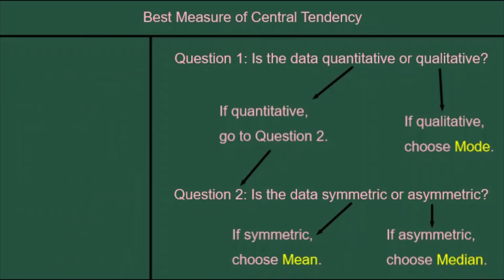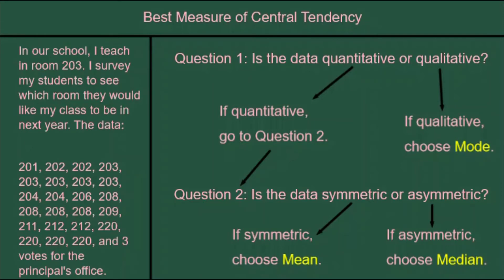One more example. Here, I'm doing a survey among students as to which classroom we should have our math class in next year. The students are choosing from a bunch of choices. And we can see that 203, which is where I'm already teaching this year, seems to be the most popular choice. Five people have voted for it.